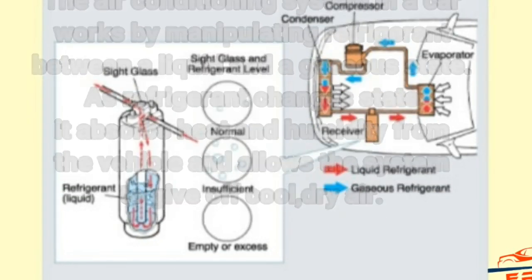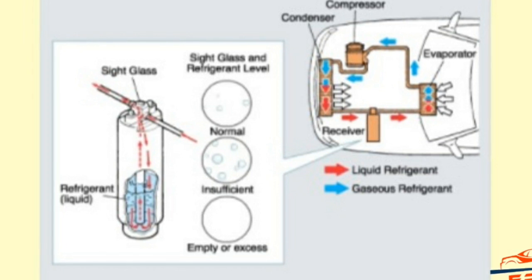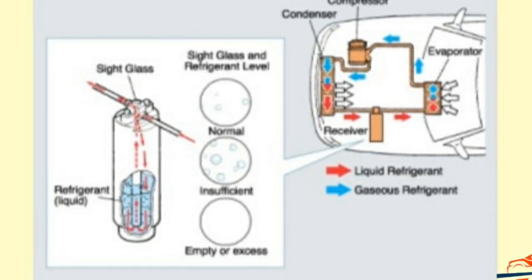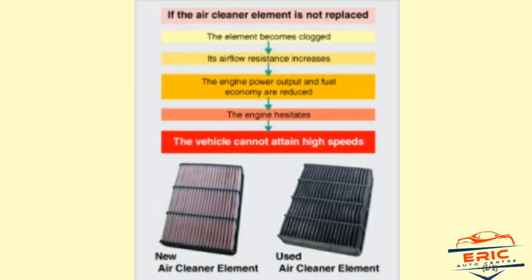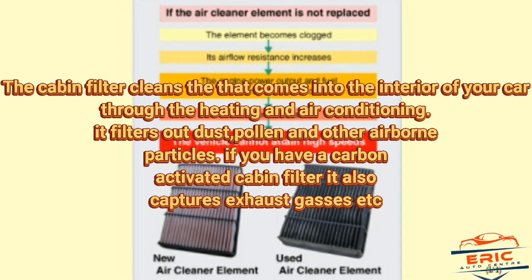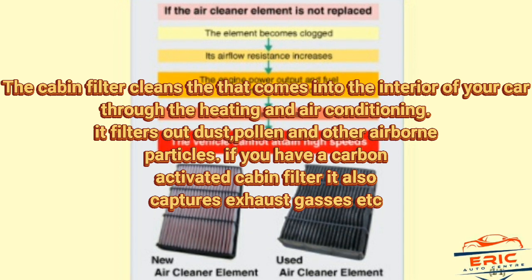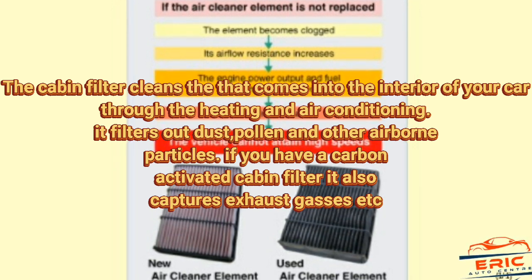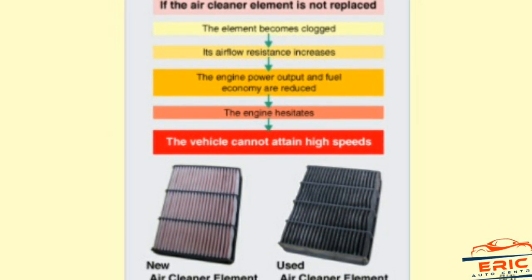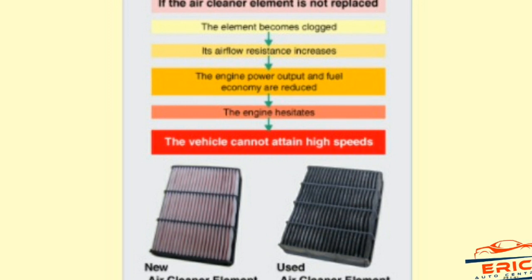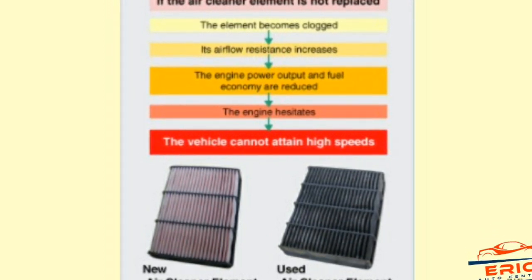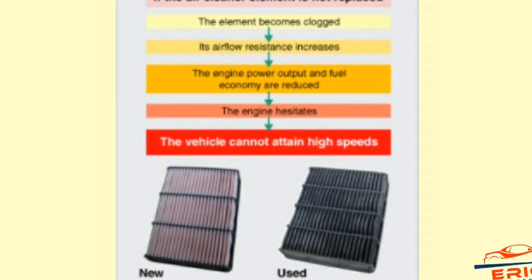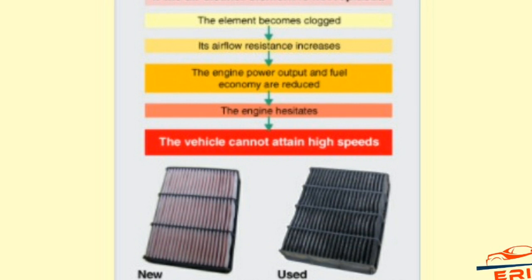Lastly, we have the air cleaner. The cabin filter cleanses the air that comes into the interior of your car through the heating and air conditioning system. It filters out dust, pollen, and all airborne particles if you have a carbon air filter. When the filter element becomes clogged, air resistance increases, reducing engine power output and fuel economy. The air cleaner prevents dirt from going inside the engine so the throttle body can operate normally.